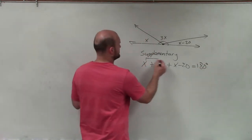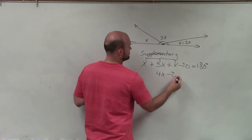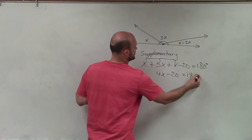So then I can just combine my like terms. x plus 3x plus x is going to be 4x minus 20 equals 180 degrees.